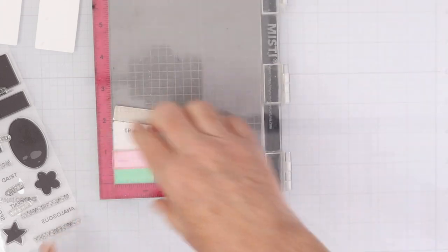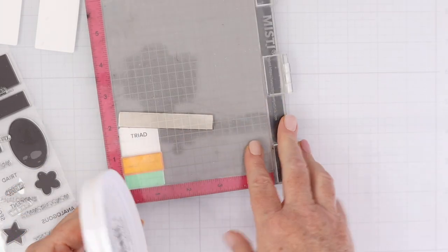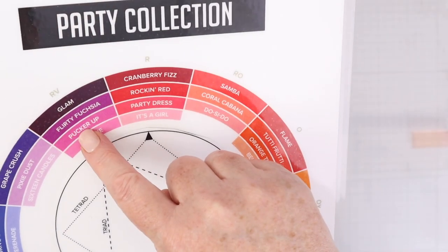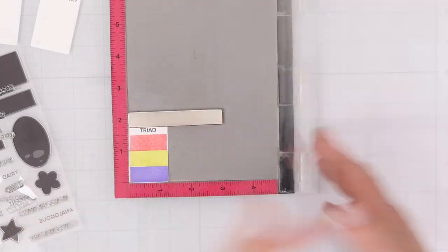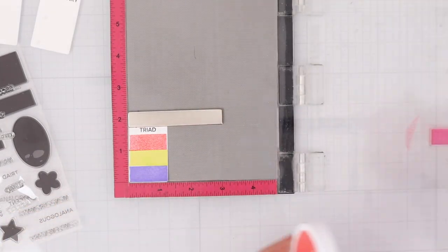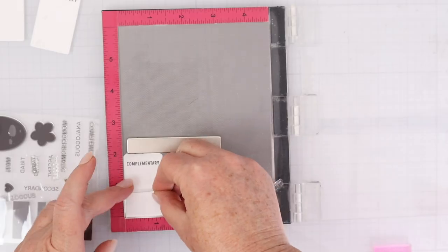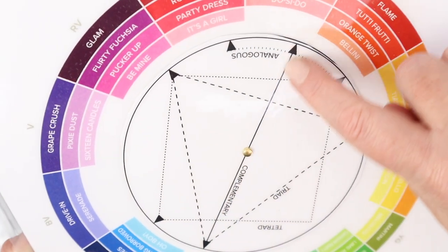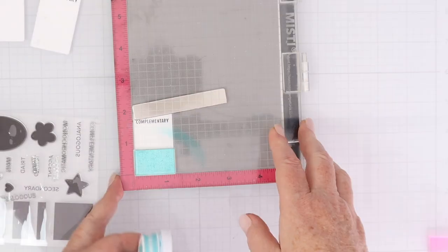I'm going to do a triad this time, which is another three combination. And again, looking at the color wheel, using the colors that you have and stamping them out really helps you to come up with new ideas. Again, this color combination I would never have created on my own. You know, I don't really work with purple, but I love how fresh and fun that is.